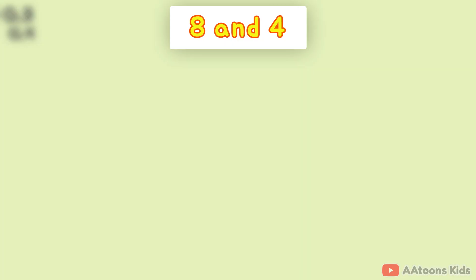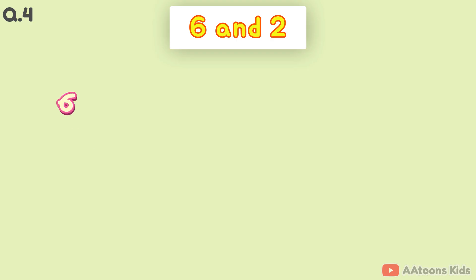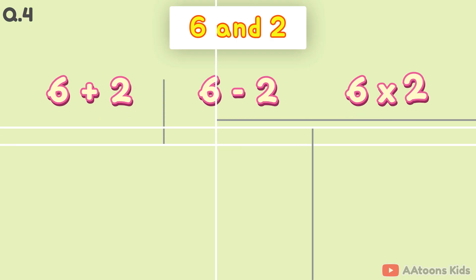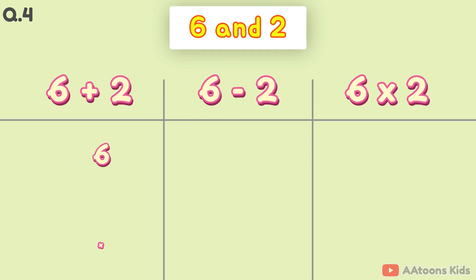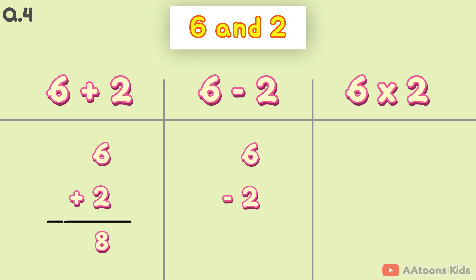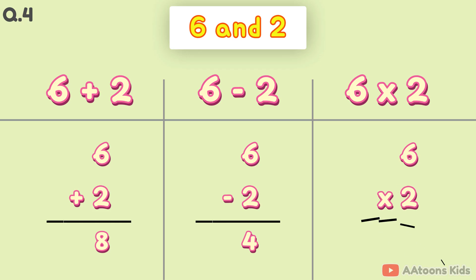The two numbers are 6 and 2. 6 plus 2 is 8. 6 minus 2 is 4. 6 times 2 is 12.